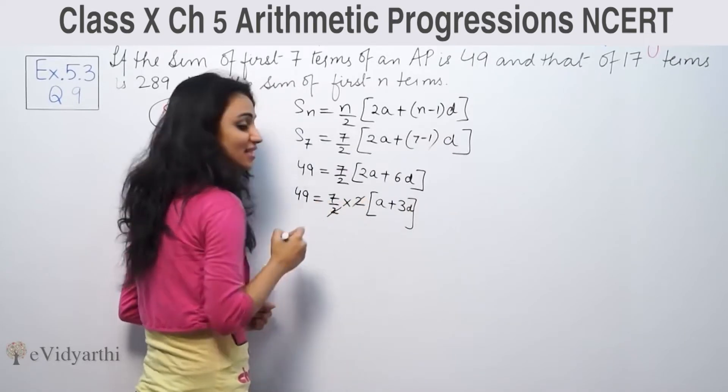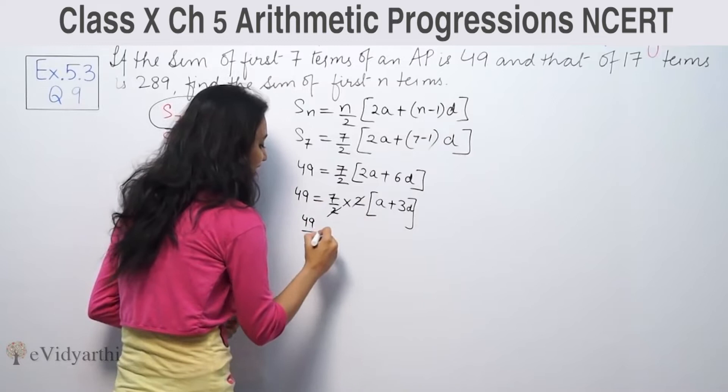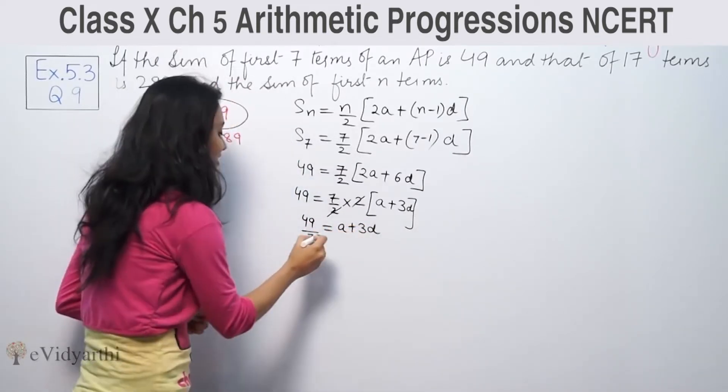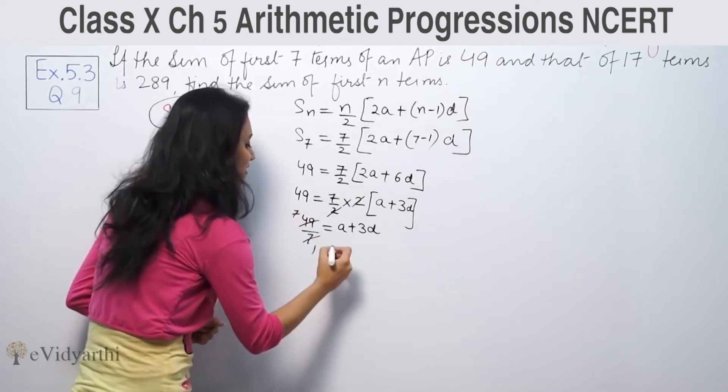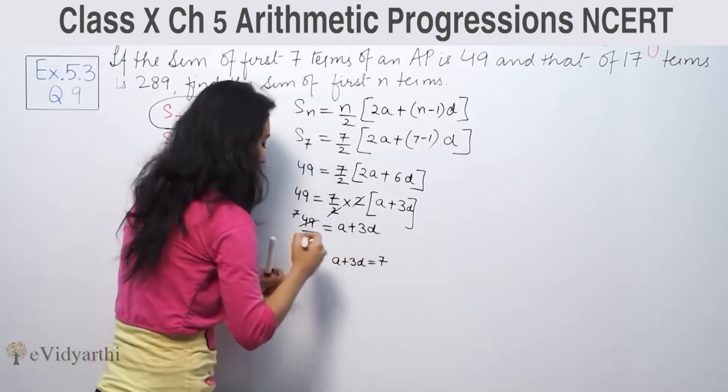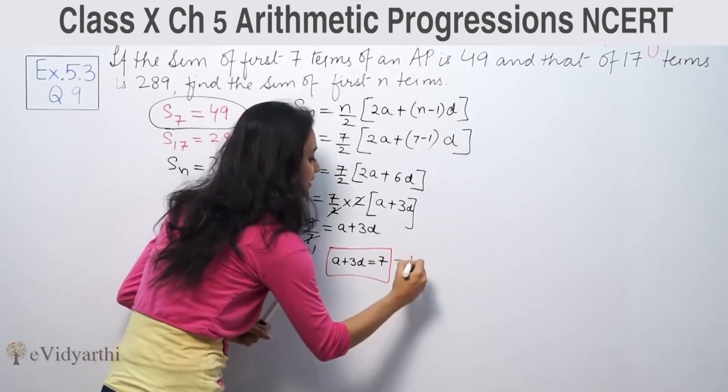After simplification, 49 by 7 equals a plus 3d. So 7 equals a plus 3d. This is equation number 1.